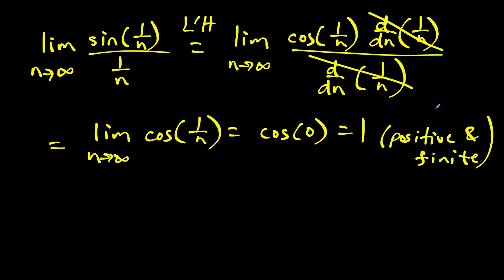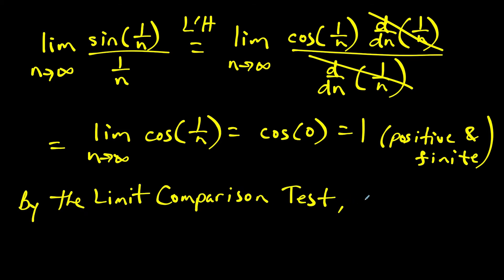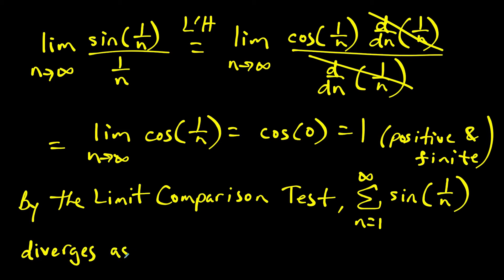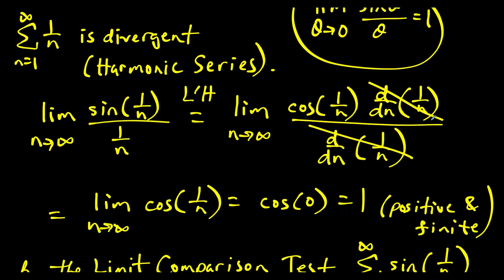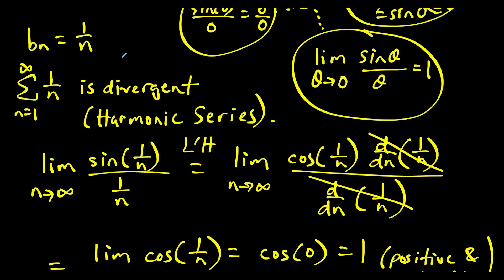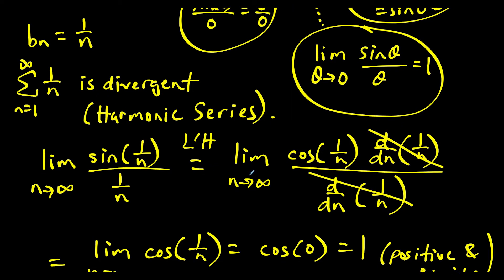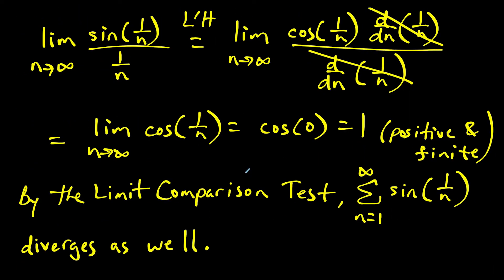Since the limit is positive and finite, by the limit comparison test both series diverge. An important detail: if you introduce a divergent comparative series and the limit comparison test applies, it tells you that both series diverge. So since our comparative series is the divergent harmonic series, the original series also diverges.